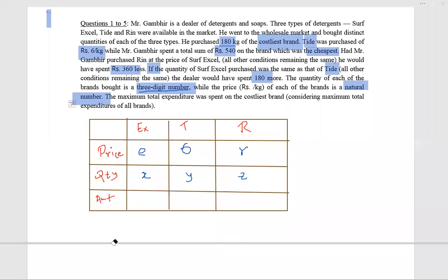One more interesting fact we have: he purchased 180 kg of the costliest brand. Wait, sorry - 6 is not the cheapest one. 6 can be the costliest one. He spent 540 on the cheapest. So among Surf Excel and Rin, one of them is the cheapest. Which one? If Surf Excel quantity purchased was same as Tide, then he has to spend more.